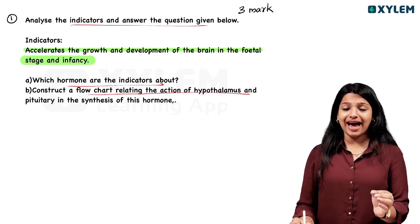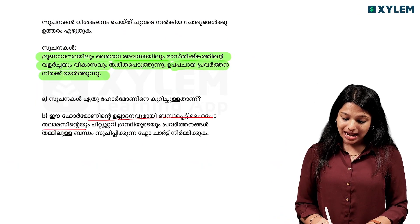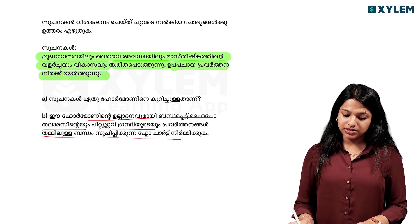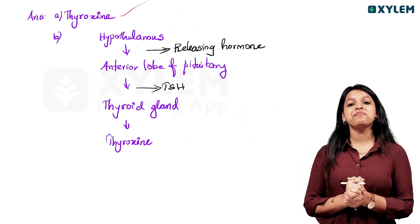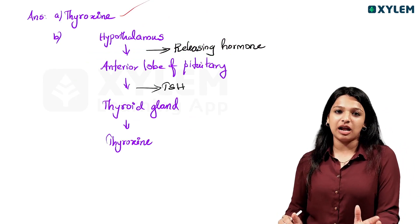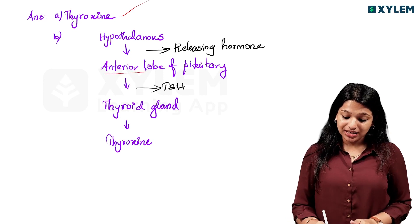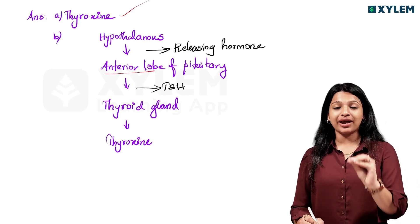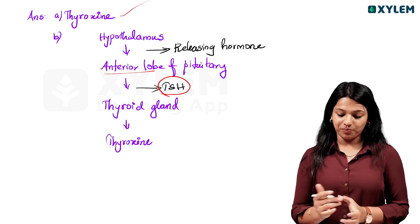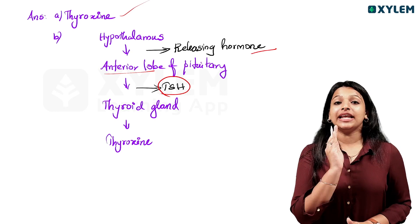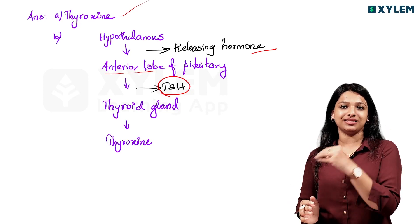Now construct a flowchart relating the action of hypothalamus and pituitary in the synthesis of this hormone — thyroxine. The flowchart involves the hypothalamus and the pituitary gland. Hypothalamus stimulates the anterior lobe of the pituitary gland. If we have a new thyroid gland, I talk about thyroid stimulating hormone.